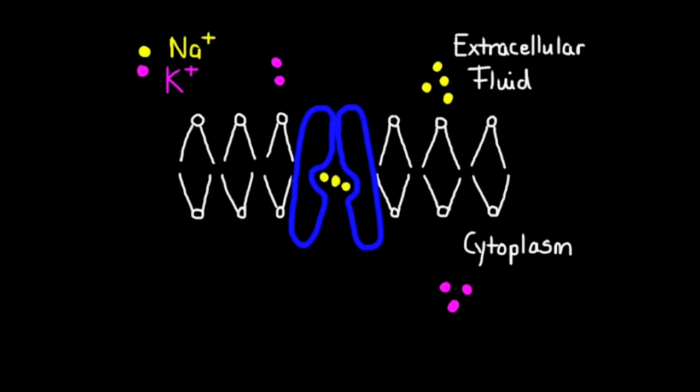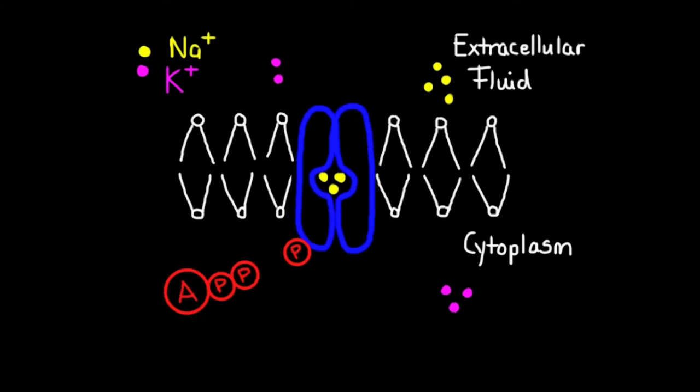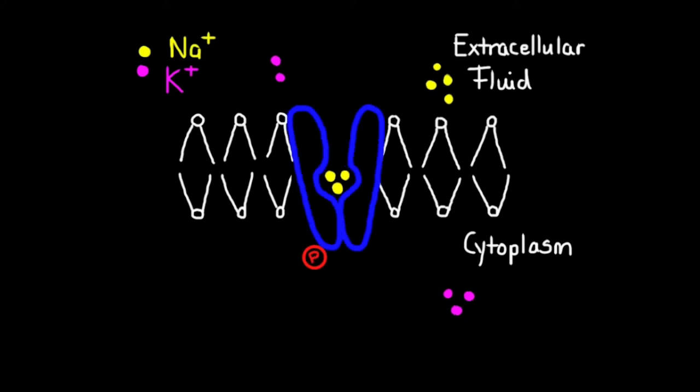ATP then binds to the protein pump. This is converted from ATP to ADP. The breaking off of the phosphate from ATP provides the energy for the conformational shape change of the protein. This allows the sodium ions to pass into the extracellular fluid.